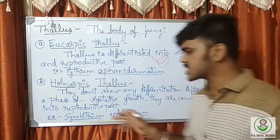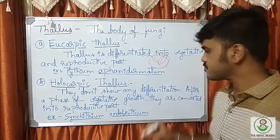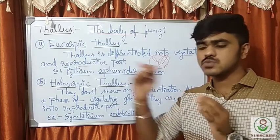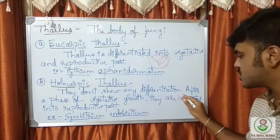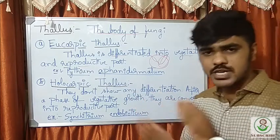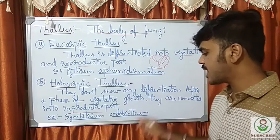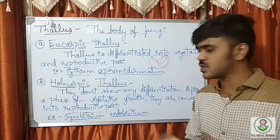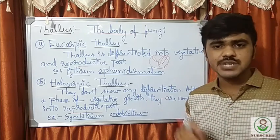In the holocarpic thallus, there is no differentiation. The entire body goes for vegetative growth up to a certain stage, then it is converted into a reproductive one. They don't show any differentiation — after a phase of vegetative growth they are converted into the reproductive part. The best example is Synchytrium endobioticum. At a certain point in time you can see both vegetative and reproductive, or at certain points only one.